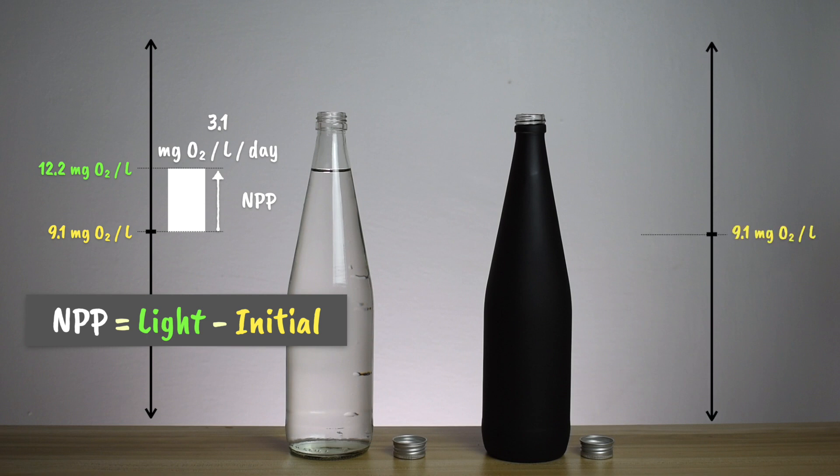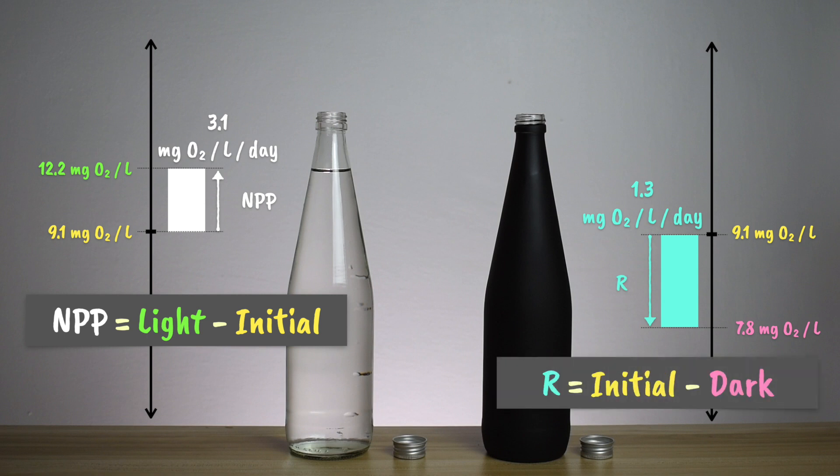The dark bottle started off at 9.1, but dropped to 7.8. No oxygen was produced because there was no light for photosynthesis, but the decrease of 1.3 milligrams of oxygen per litre, per 24 hours, is due to respiration. The respiratory losses are simply the initial bottle value minus the dark one.